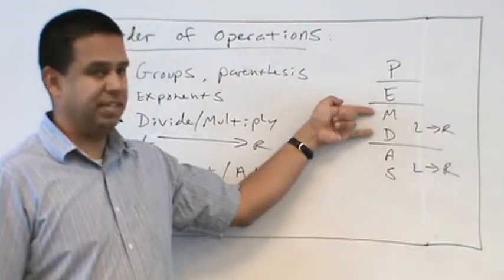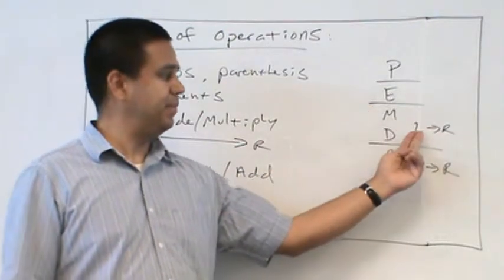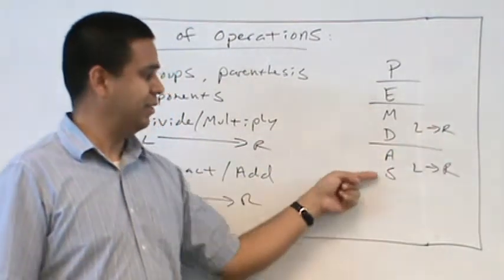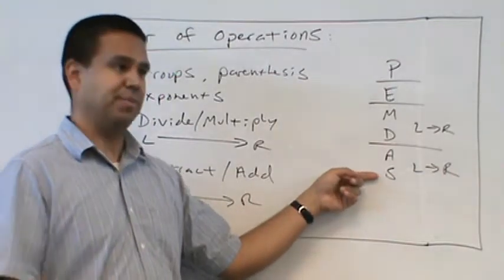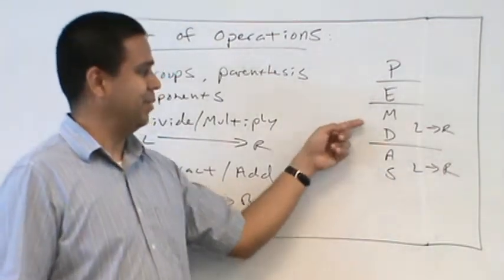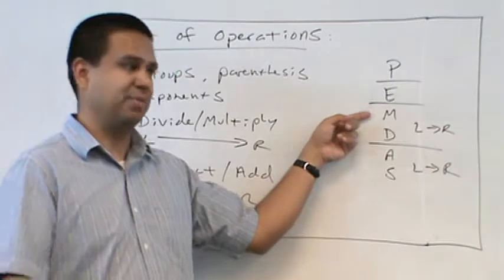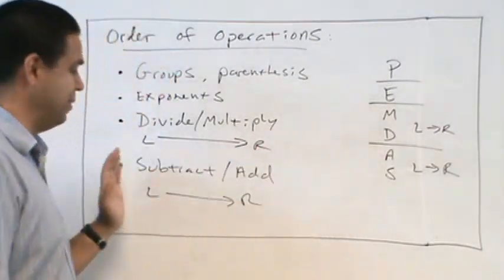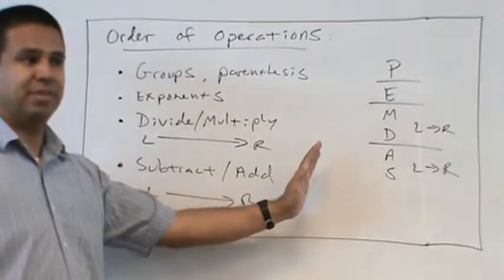Once we get to these steps, we go from left to right. Okay? Sometimes we subtract first. Sometimes we add first. Sometimes we multiply first. Sometimes we divide first. It depends from left to right. Whichever comes first.